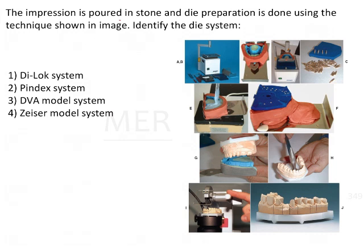The impression is poured in stone and die preparation is done using the technique shown in the image. We need to identify the die system. The options are the Dilock system, Pindex system, DVA model system, and Zsir model system. Let's go through these die systems one by one.